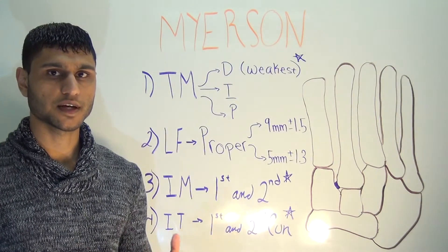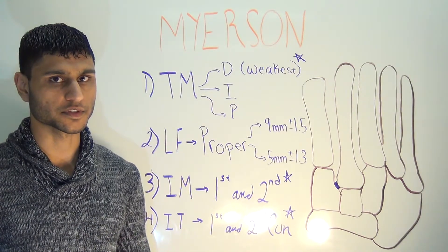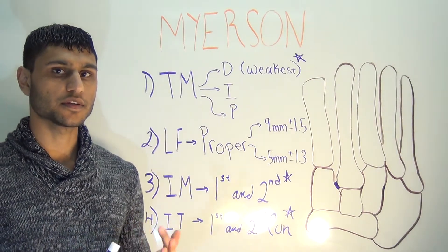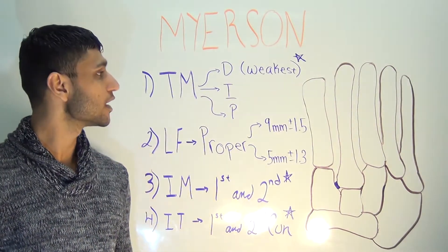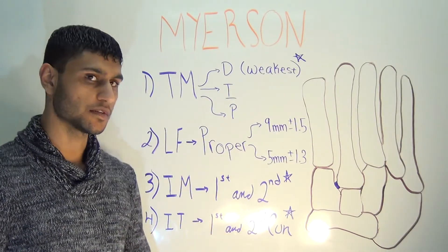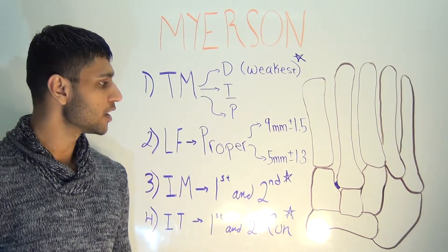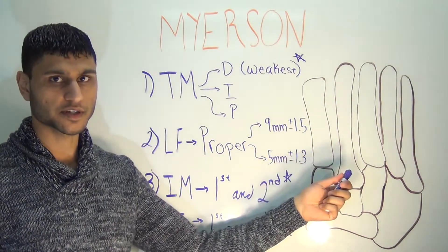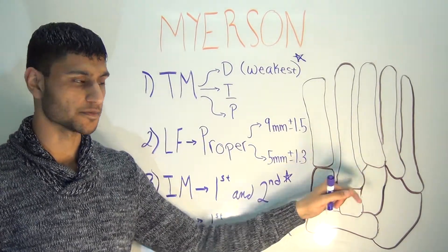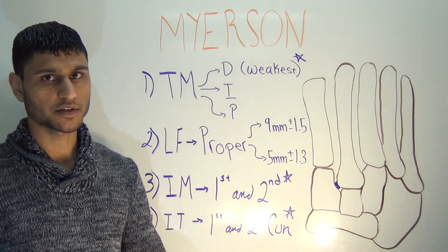The Lisfranc joint complex is held together by a number of tarsal-metatarsal, inter-metatarsal, and intertarsal ligaments. The tarsal-metatarsal ligaments are divided into a dorsal, interosseous, and plantar component, and the weakest is the dorsal component. The strongest and most important of the tarsal-metatarsal ligaments is the Lisfranc ligament itself, which courses in an antero-lateral direction obliquely, starting from the medial cuneiform and attaching to the base of the second metatarsal. It has a weak dorsal component and a strong plantar and interosseous component.